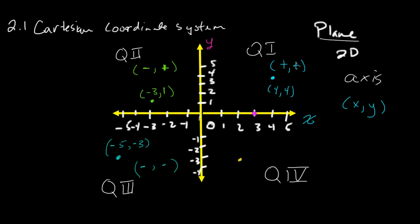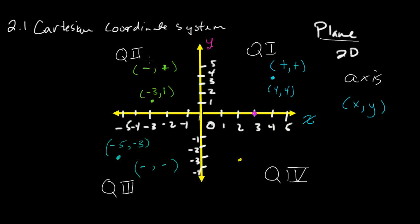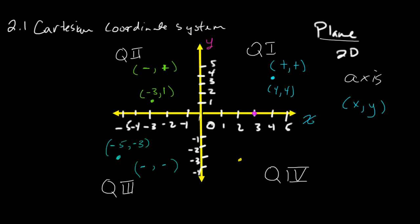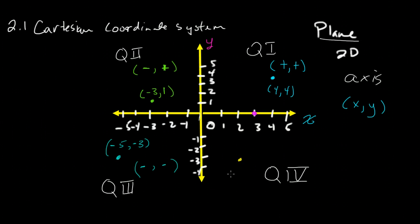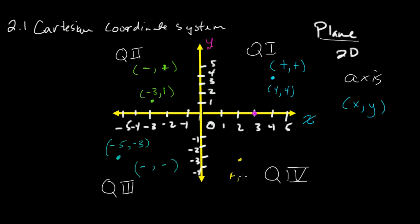So quadrant 1 is positive, positive, quadrant 2 is negative, positive, quadrant 3 is negative, negative. So therefore, by process of elimination, what we haven't had yet is a positive x with a negative y.